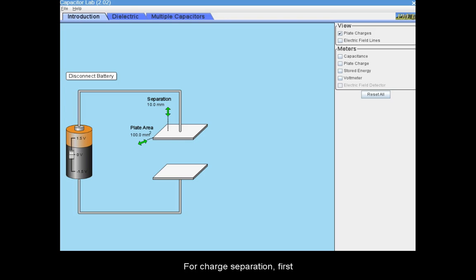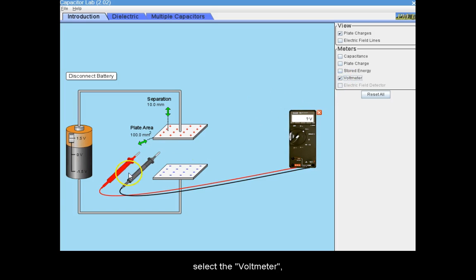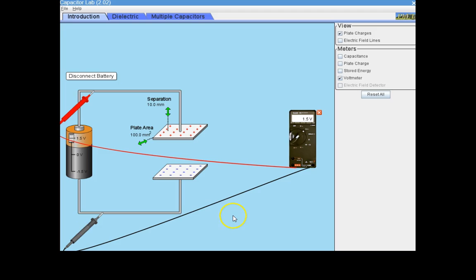For charge separation, first you need to produce a potential difference using the battery. You can select the potential difference using the slider on the battery and then place it on the wires to be able to select an exact numeric potential difference.